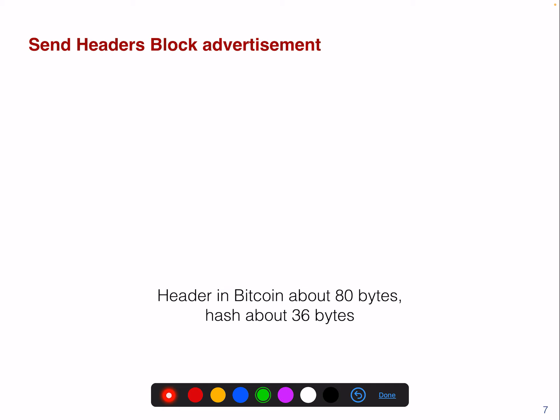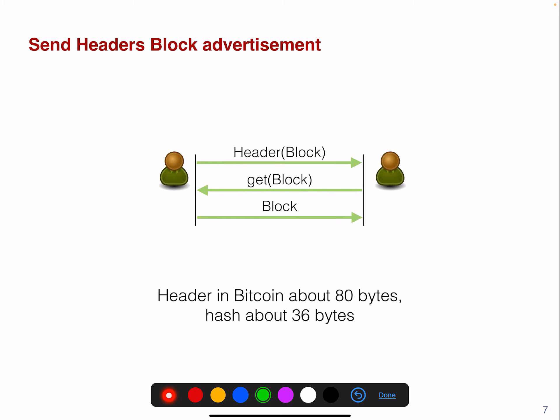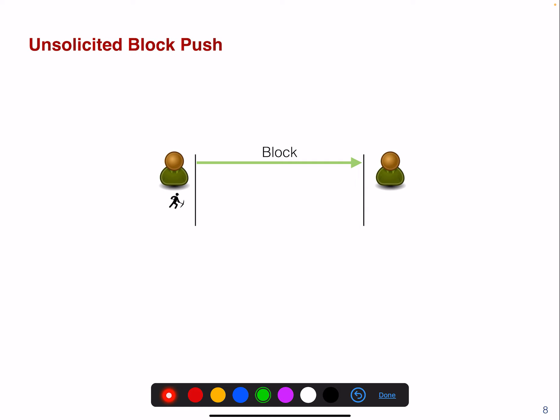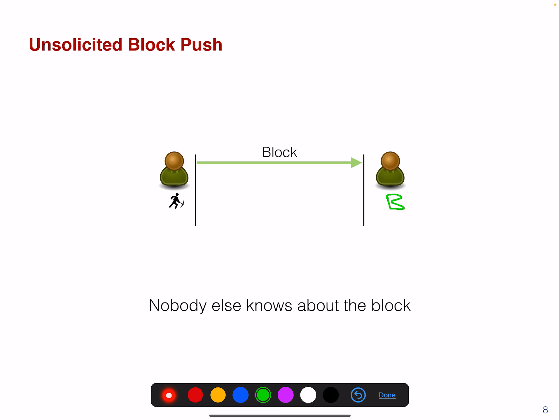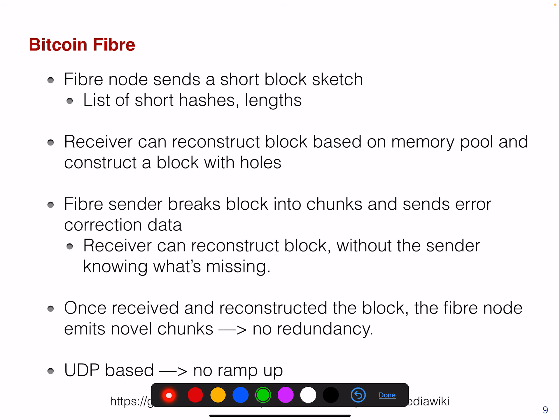Now let's look at the send headers block advertisement. The header in Bitcoin is about 80 bytes, and the hash of it is only about 36 bytes. So we're sending the header of the block, then GET block, then the block. The unsolicited block push looks like this: we have the miner, he's aware of the block, and he just sends the block to the other peer because he's the only peer aware of it. He knows that peer B doesn't need to request this block — nobody else knows about it.